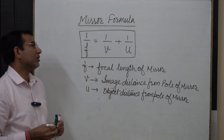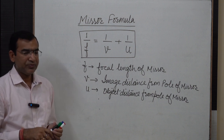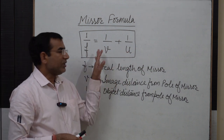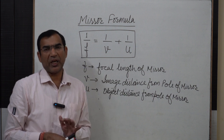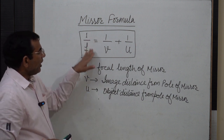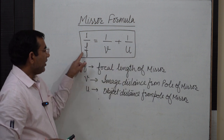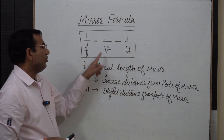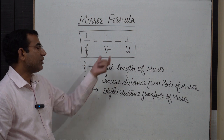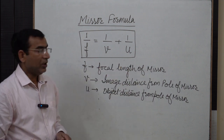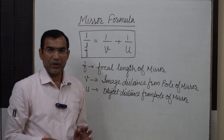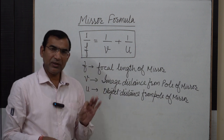This mirror formula should be learned because there are numerical problems based on it. The values of these variables are substituted according to sign convention, which we shall discuss in the next lecture. The mirror formula 1/F = 1/V + 1/U is the same for both convex mirror and concave mirror. The only difference is in the sign convention, which we shall discuss in the next lecture.